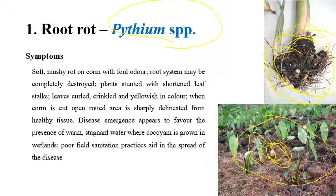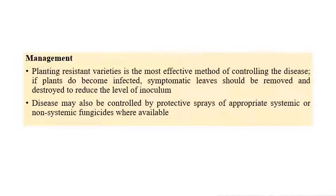The spread of the disease is mainly due to poor sanitation. Coming to the management aspects, the most effective method is using resistant varieties. If resistant varieties are not available or the disease has already infected, scientists suggest removal and destruction of infected plants to reduce inoculum level. Application of systemic and non-systemic fungicides based on requirement and availability is also recommended.